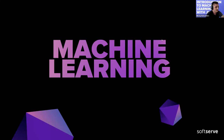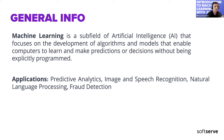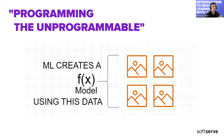Let's start with machine learning and what it is. Machine learning is a subfield of artificial intelligence that focuses on the development of algorithms and models that enable computers to learn and make predictions or decisions without being explicitly programmed. Some of the applications are predictive analytics, image and speech recognition, natural language processing, and fraud detection. We can say that machine learning gives us the opportunity to program the unprogrammable.